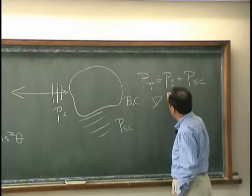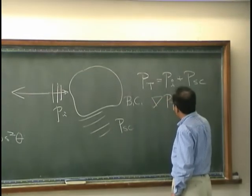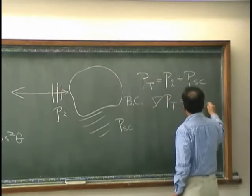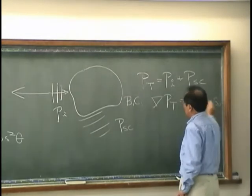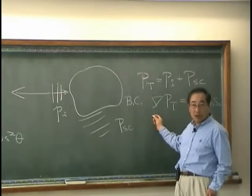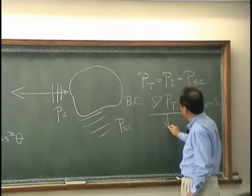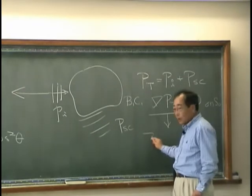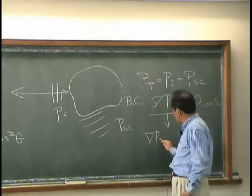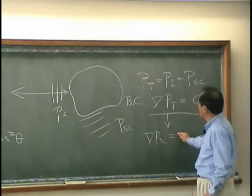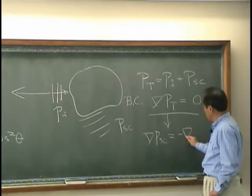The boundary condition over here is the velocity on this surface has to be 0. Therefore, I can say PT is equal 0 on S0. That is boundary condition.